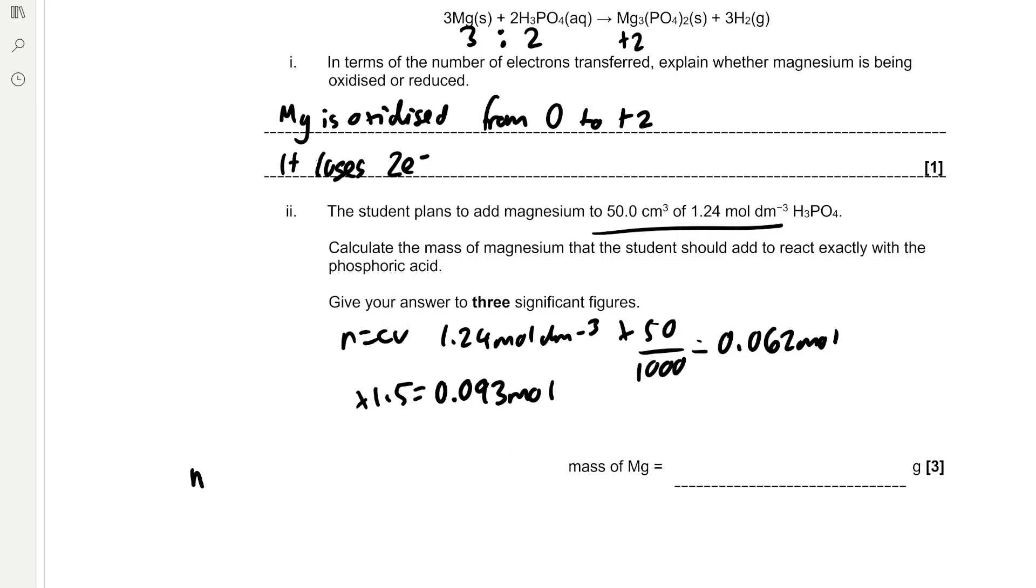And then to find the mass, we have to use the equation moles equals mass over Mr. And then we rearrange to find the mass, which is mass equals moles times Mr. So the mass is going to be equal to 0.093 mole multiplied by 24.3 grams per mole, which is 2.2599 grams. But to 3 significant figures, because we are given 3 significant figures in the question, that's 2.26 grams.